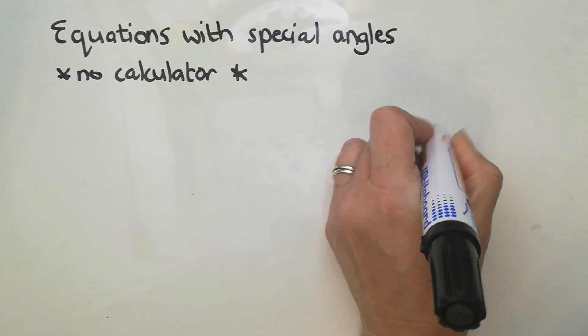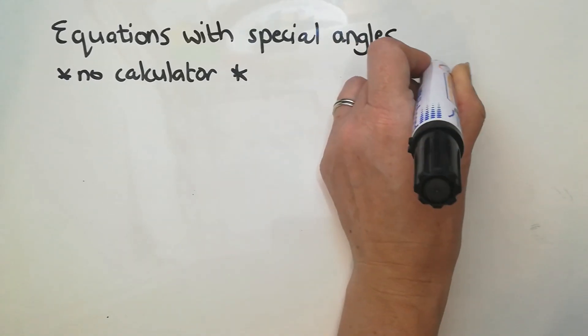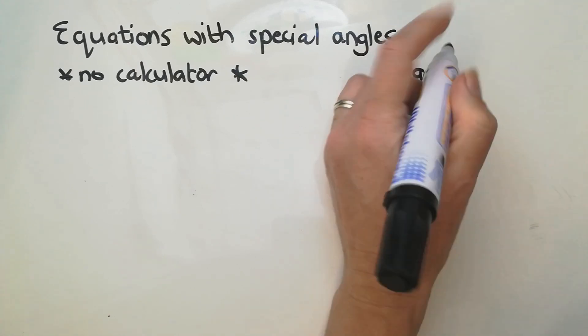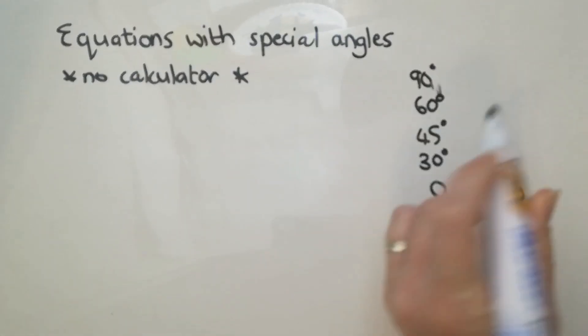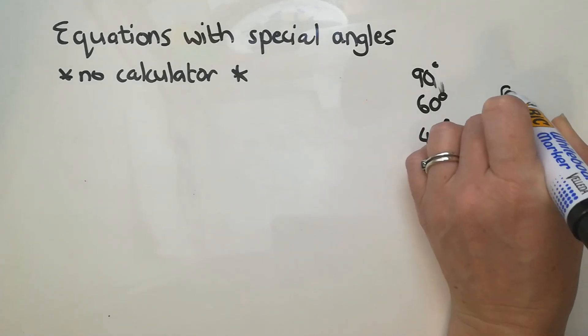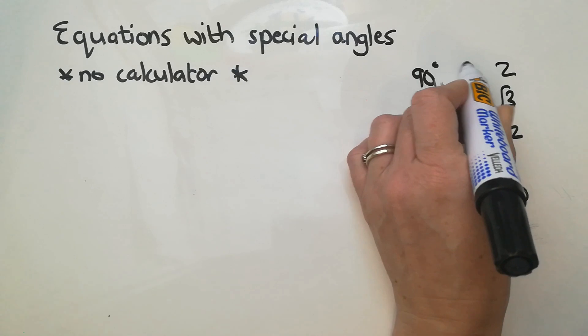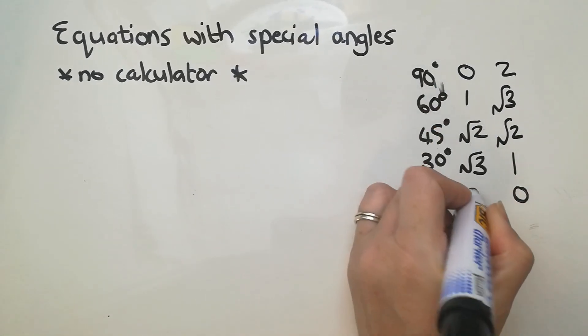You go up, 0, 30, 45, 60, and 90. And then you go up on the right hand side, going up, 0, 1, root 2, root 3, 2, and 0, 1, root 2, root 3, and 2.